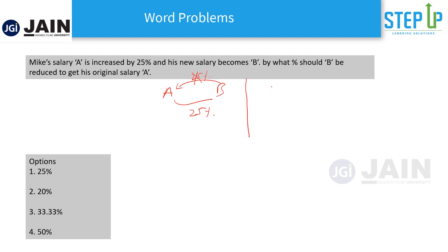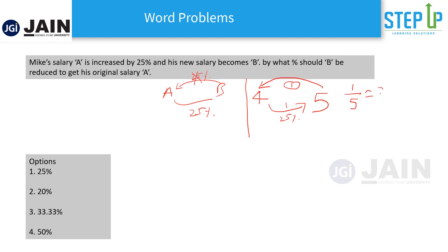How I approach this: when I hear 25%, I think in terms of 1 by 4. So let's say Mike's salary was 4. Increased by 25%, which is 1 by 4 of 4, equals 1 — so his new salary is 5. Now to reduce back to the original, I need to reduce by 1, but from the new base of 5. So 1 by 5 is 20%. The answer is 20%, not 25%.